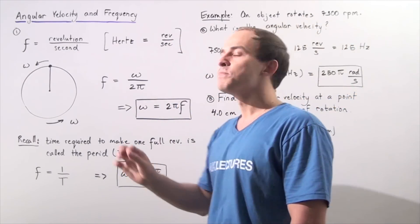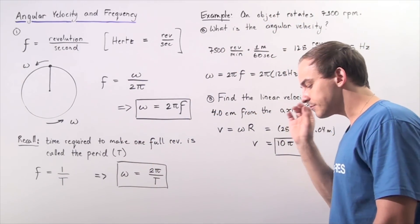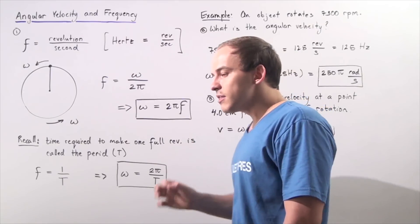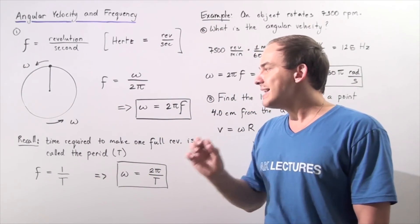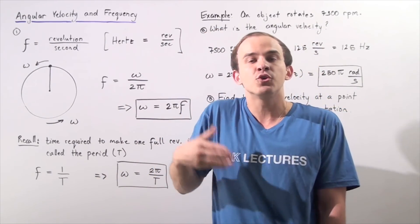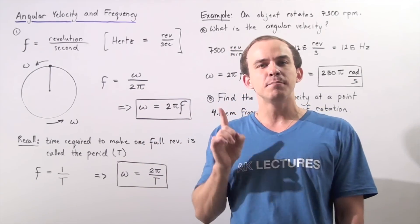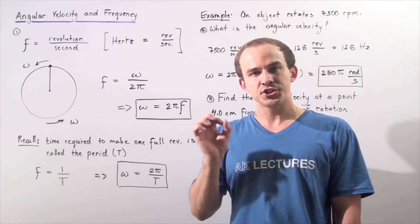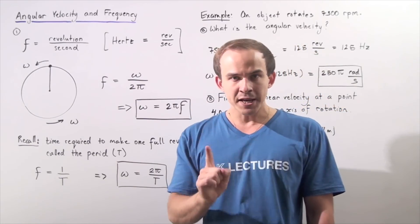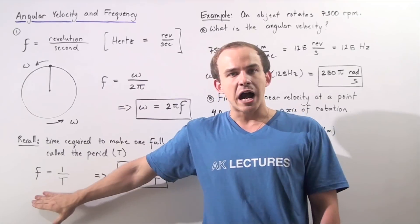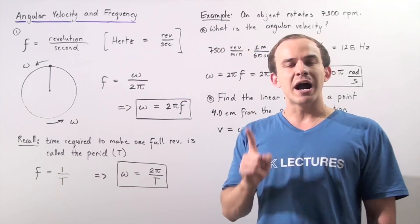Recall that the period of rotation of an object is simply the time required to make one full revolution, and it's given by the capital letter T. The relationship between frequency and period is given by: frequency is equal to one divided by the period.